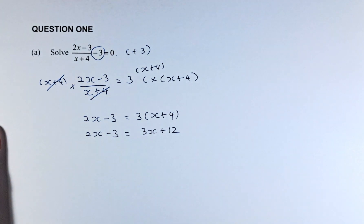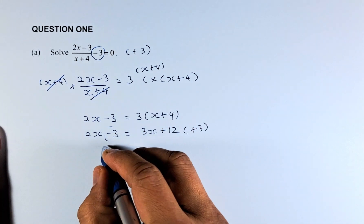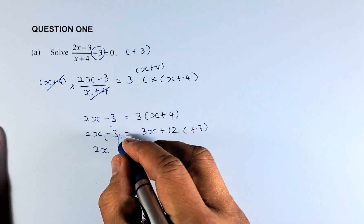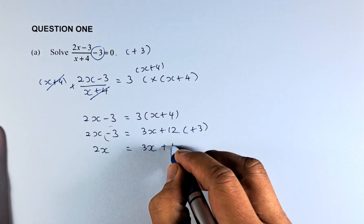Now, we are going to add 3. You must get rid of this minus 3. So it becomes 2x, that becomes 0. Minus 3 plus 3 becomes 0, equals to 3x. 12 plus 3 is going to be 15.